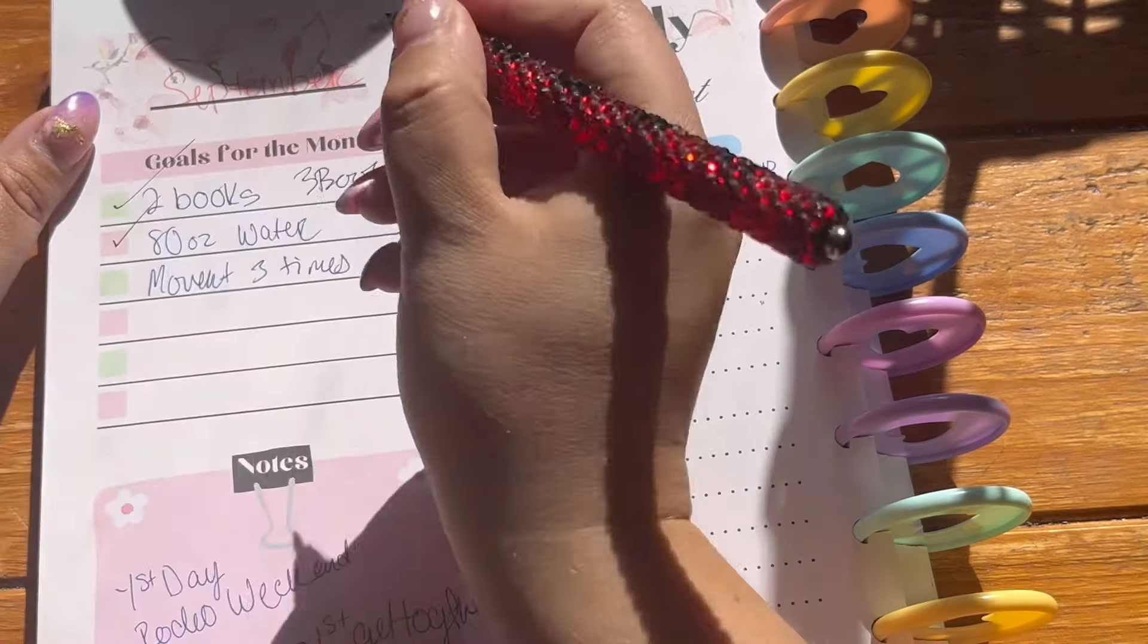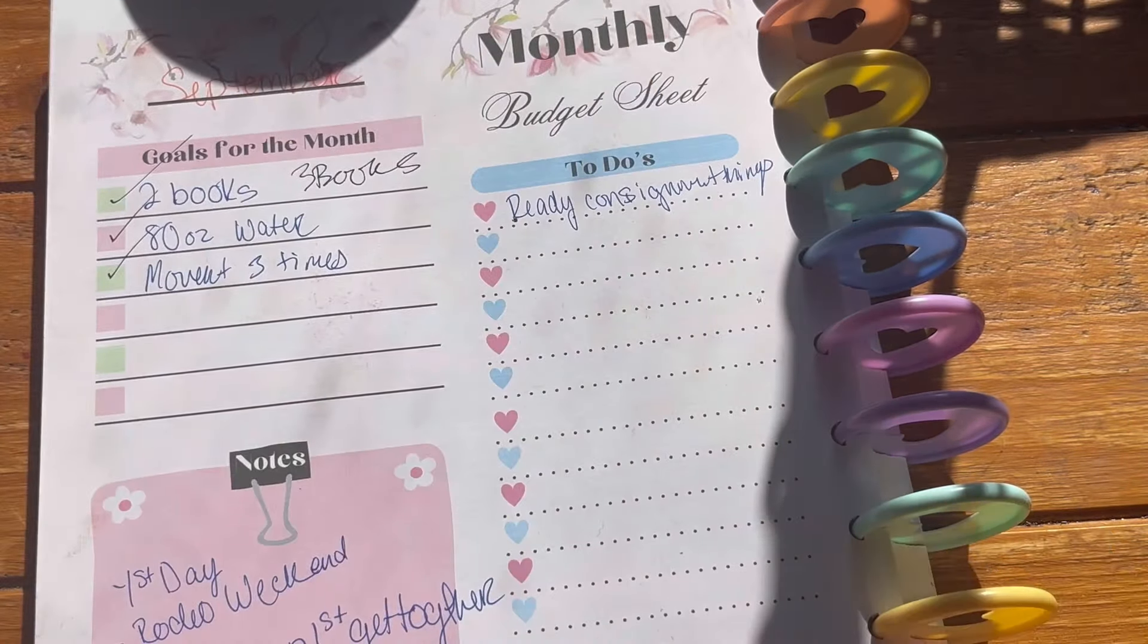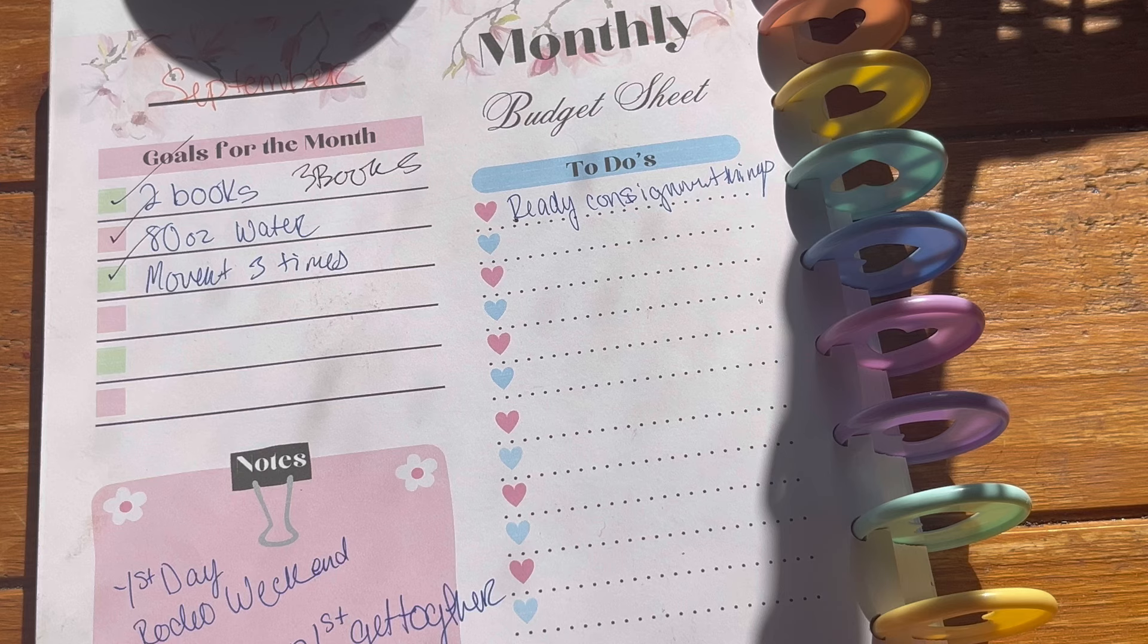80 ounces of water, we've been really good about that. And movement, it has been a wild month. I'm going to say yes because we have been so busy. There has been so much going on. It has been a complete whirlwind of just a lot of great things, but it's just been wild.